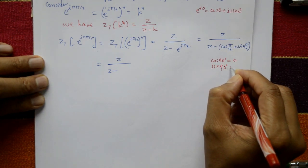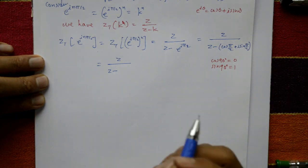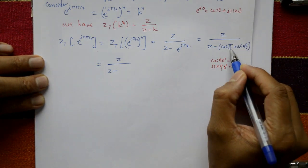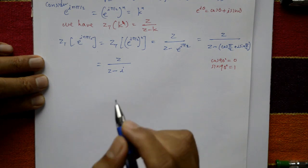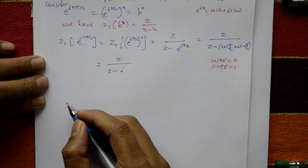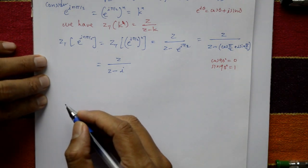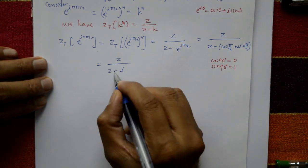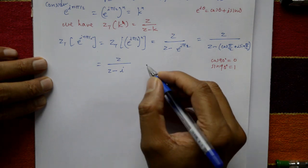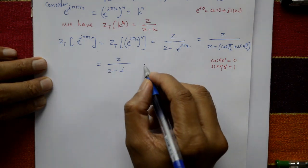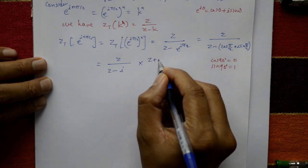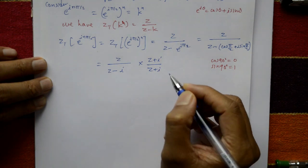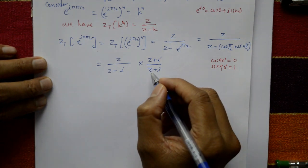cos 90° = 0 and sin 90° = 1, so this simplifies to Z/(Z − i).